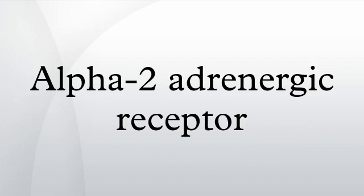The α2-adrenergic receptor is a G-protein-coupled receptor associated with the Gi heterotrimeric G-protein. It consists of three highly homologous subtypes, including α2A, α2B, and α2C adrenergic.